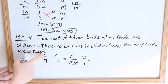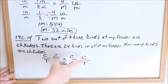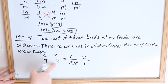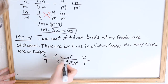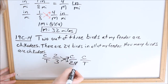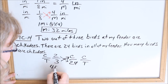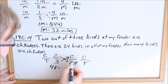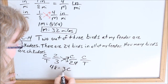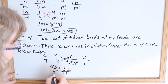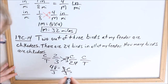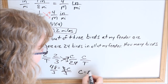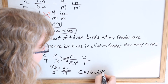Chickadees is in the numerator on both sides; total is in the denominator on both sides. Now we just use cross multiplication. Two times 24 is 48, equals 3 times C, which is 3C. Divide both sides by 3 — 48 divided by 3 is 16. So there are 16 chickadees.